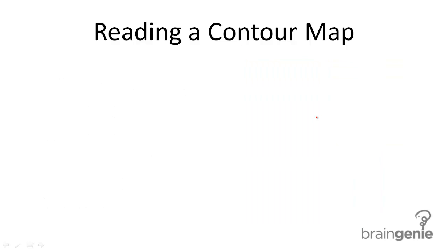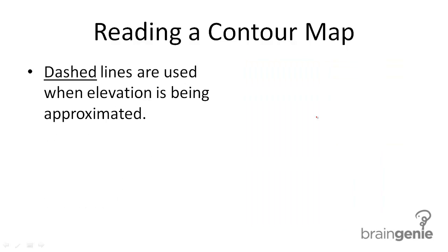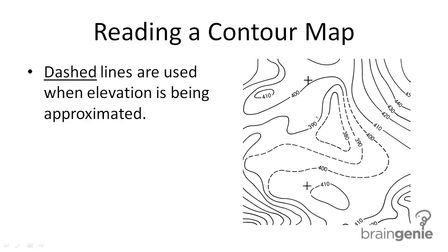Dashed lines are used when elevation is being approximated. So these dashed lines represent that we don't know exactly if it's 380, but it's about 380. And then this straight line over here is actually 380.